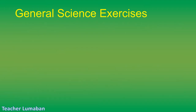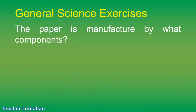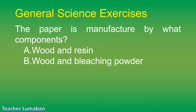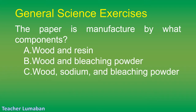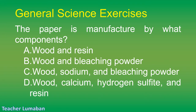What components is paper manufactured from? Letter A: wood and resin. Letter B: wood and bleaching powder. Letter C: wood, sodium, and bleaching powder. Letter D: wood, calcium, hydrogen sulfide, and resin.